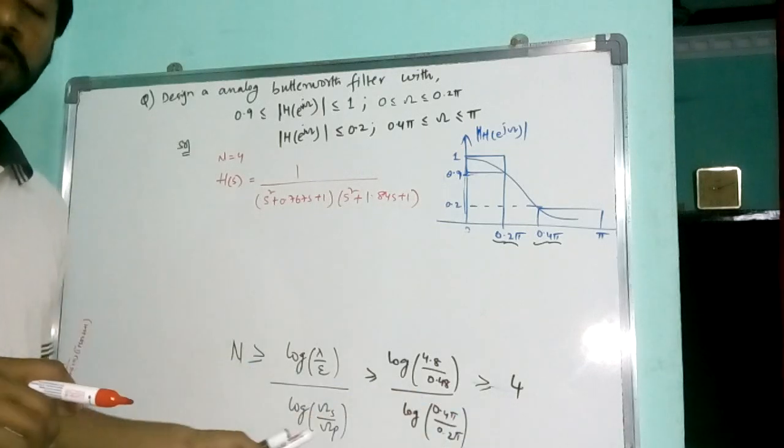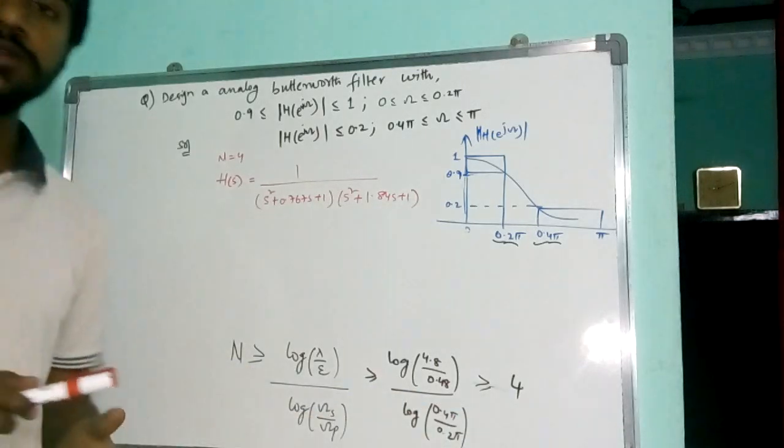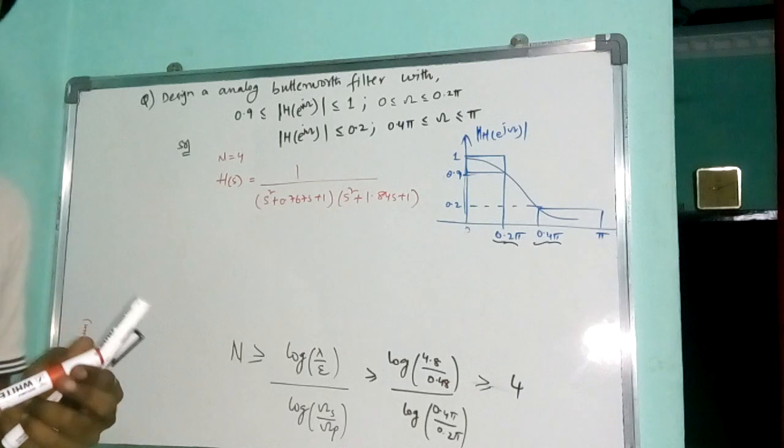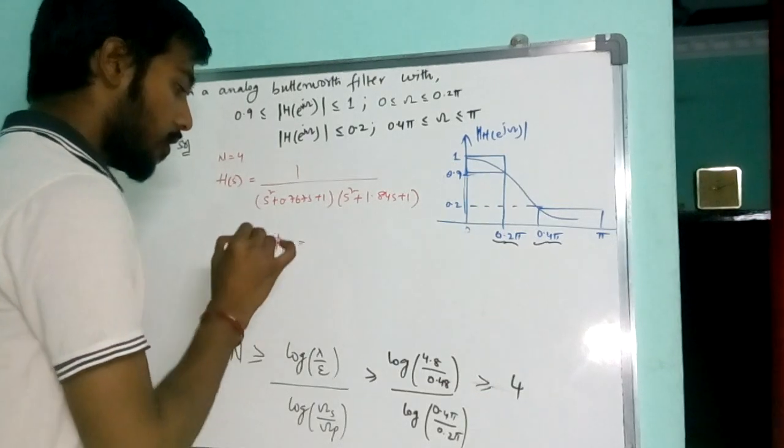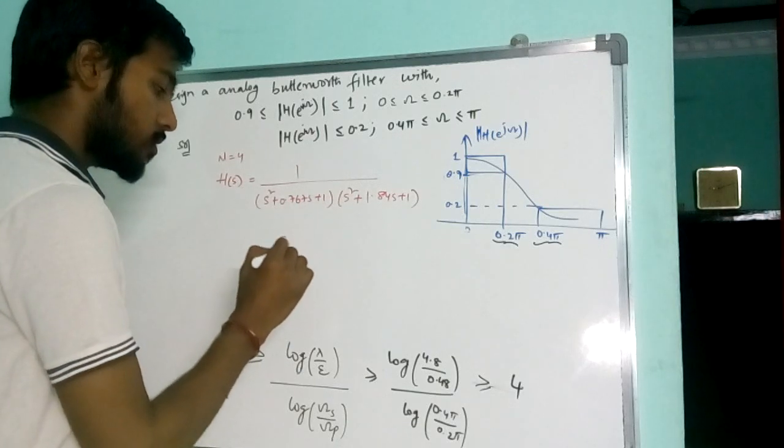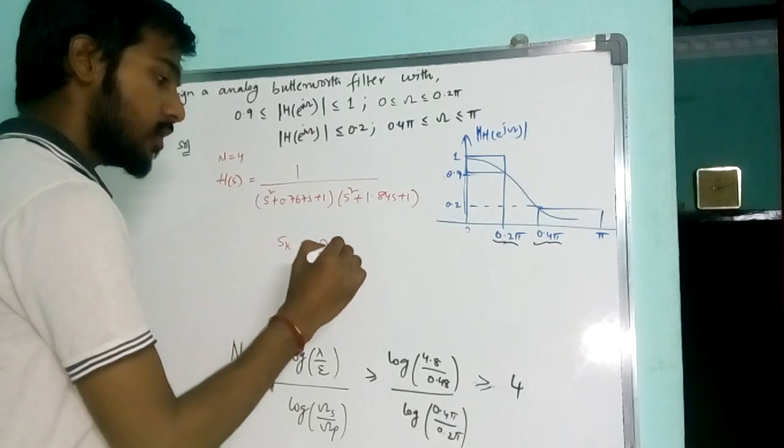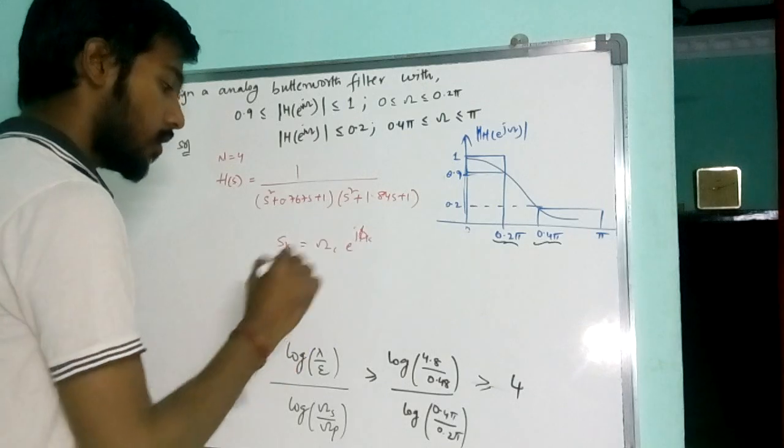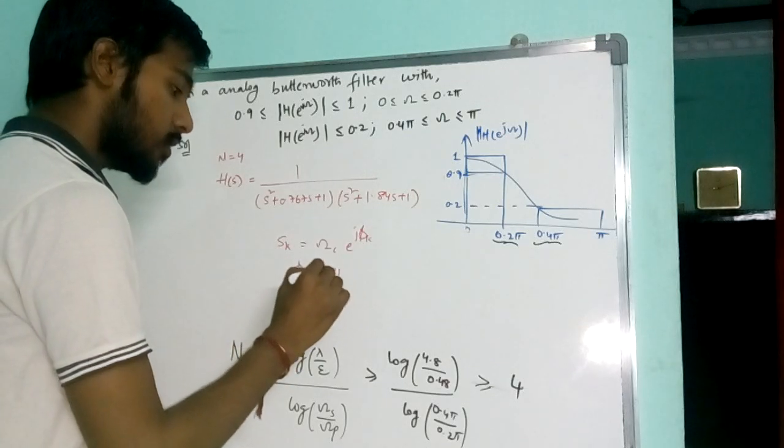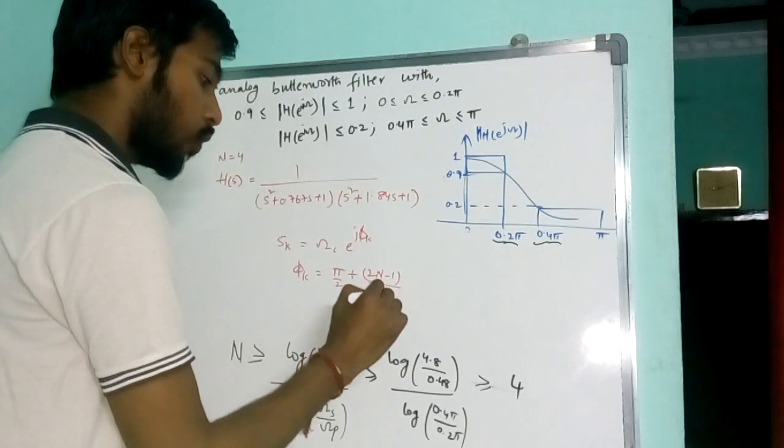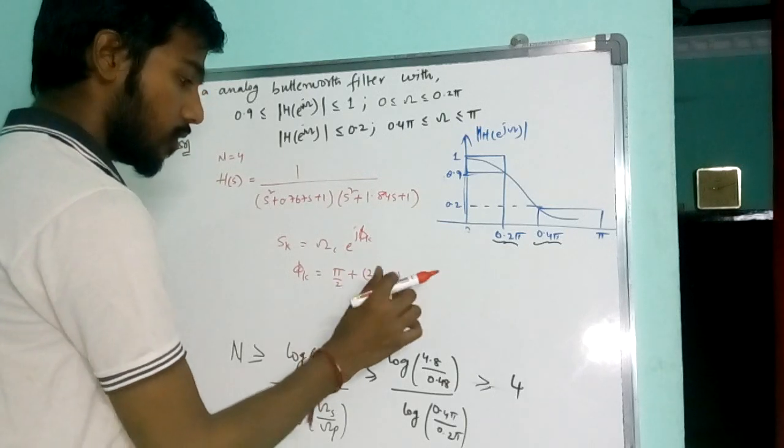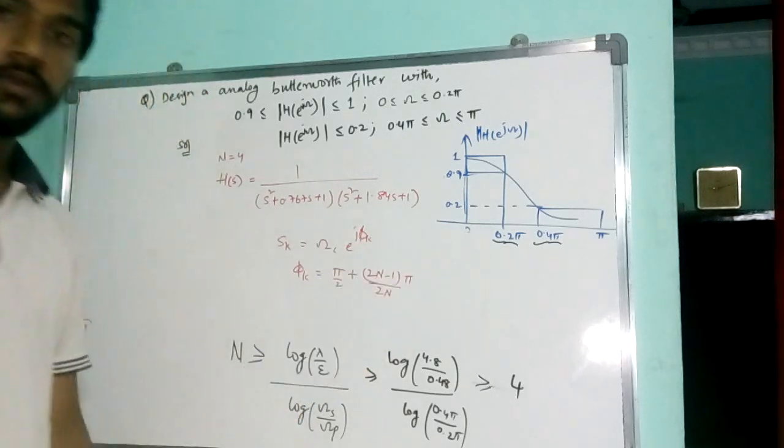If we know the table for Butterworth filter for order 1 to 7, we can write it down directly. If not, go with the formula. Now S k is equal to omega c into e power j phi k, where phi k is given as phi by 2 plus 2n minus 1 by 2n phi.